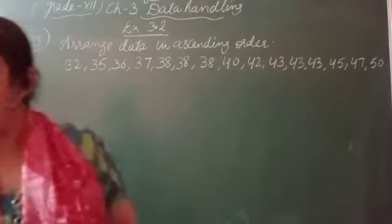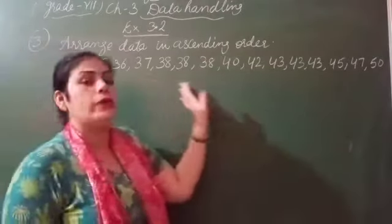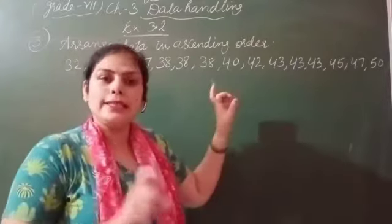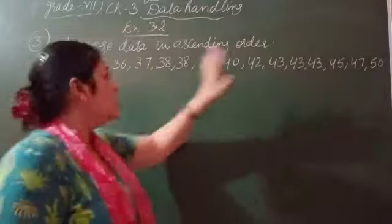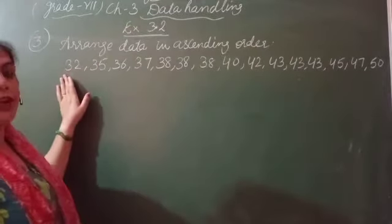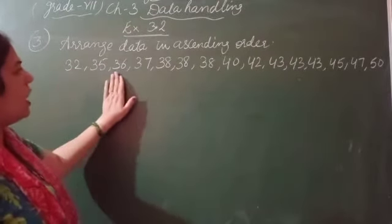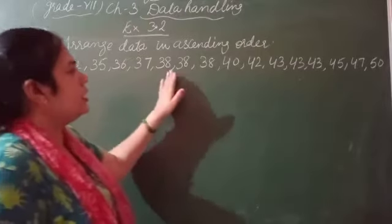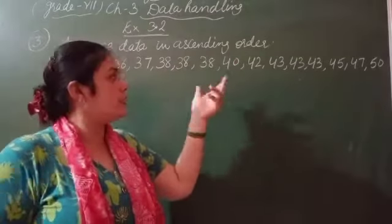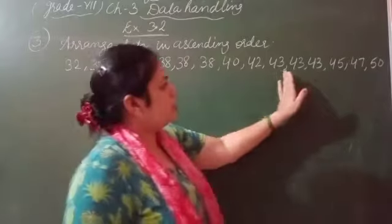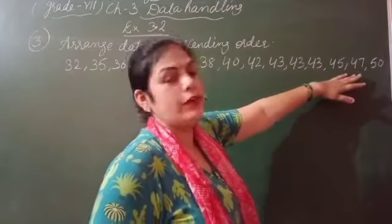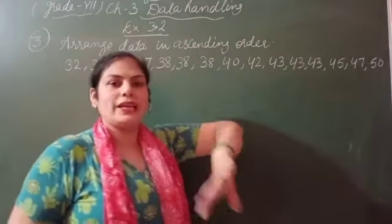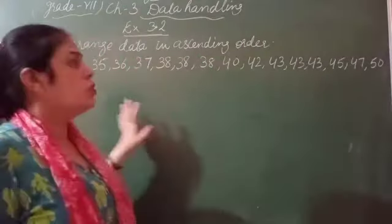What is our first step? We have to arrange our data in ascending order, from lowest to greatest. The lowest value is 32, then 35, 36, 37, 38. 38 appears three times for 3 students. Then 43, which is also the weight of 3 students. Then 40, 45, 47, 50. The maximum weight is 50.